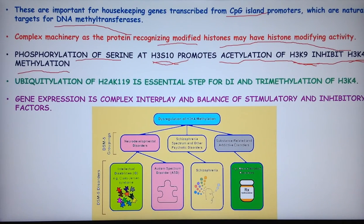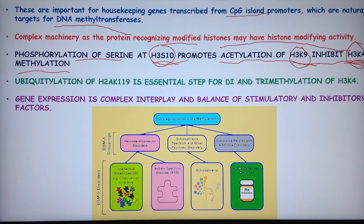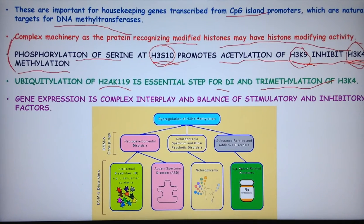Phosphorylation of serine at H3S10 and acetylation of H3K9 inhibit H3K4 methylation. When H3K9 is acetylated, this inhibits H3K4 methylation, which in turn brings about the methylation of CpG-rich promoters, resulting in gene silencing. Ubiquitination of H2AK119 is an essential step for di- and trimethylation of H3K4, and these modifications lead towards heterochromatin or euchromatin and active gene expression accordingly.